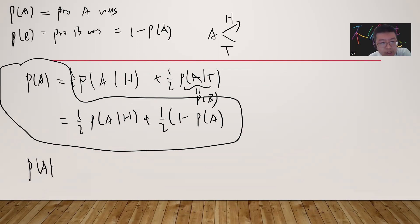Now I need to solve P(A|H). When the first time A throws H, there are two cases. When A throws H, B has two cases - either throw H or T.